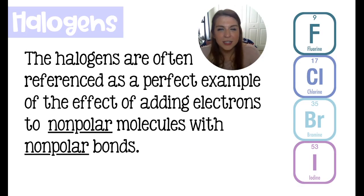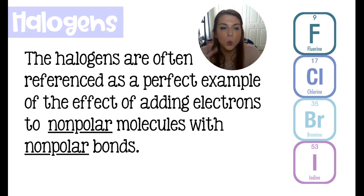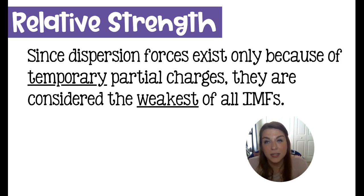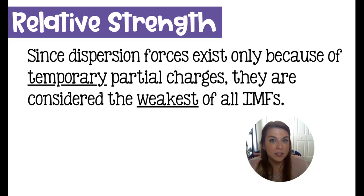Nearly every intermolecular force test indicates the halogens as the perfect example of nonpolar molecules and dispersion forces, because they have nonpolar molecules with nonpolar bonds. The halogens are a key group to focus on when it comes to dispersion forces. Dispersion forces — imagined like magnets — involve temporary partial charges, which are the weakest of all intermolecular forces. Because those partial charges are temporary, jiggling around with one area positive one second and negative the next, this is a very, very weak type of intermolecular force.